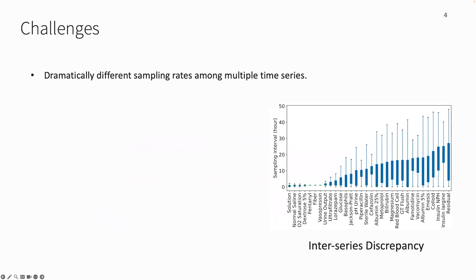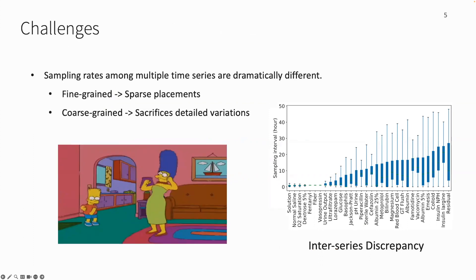Moreover, the sampling rates among series can be dramatically different. This causes a dilemma in unifying multivariate time series. Fine-grained unification leads to sparse placement, while coarse-grained unification sacrifices details in high-frequency signals.